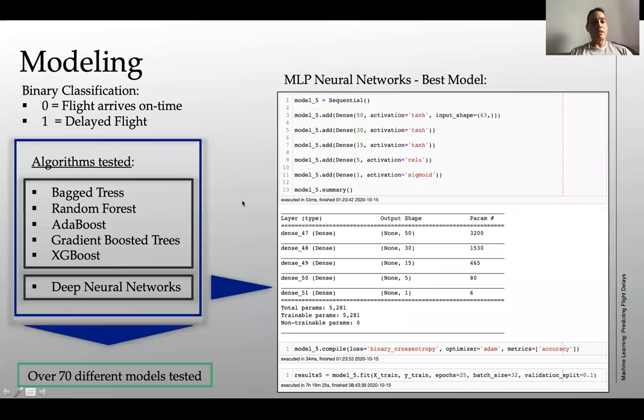Now, in terms of the modeling, I already mentioned that this is a binary classification problem. So a zero is a flight that is going to arrive on time and a one is going to be a delayed flight. I tested six different types of algorithms and I divided them into two groups. The first five were bagging trees, random forest, AdaBoost, gradient boosted trees and XGBoost and then separately deep neural networks.